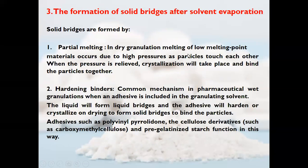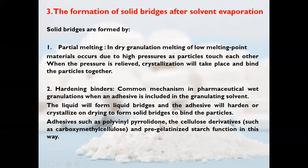Solid bridges are formed either by partial melting, by hardening of binders, or by crystallization of dissolved substances. In dry granulation, melting of low melting point materials occurs due to high pressure applied during slugging and roller compaction; as particles touch and pressure is removed, crystallization takes place, binding the particles together. The common mechanism in pharmaceutical wet granulation is hardening binders — when an adhesive is included in the granulating solvent, the liquid forms liquid bridges and the adhesive hardens or crystallizes on drying to form solid bridges. Adhesives such as polyvinylpyrrolidone, cellulose derivatives such as carboxymethyl cellulose, and pre-gelatinized starch function in this way.